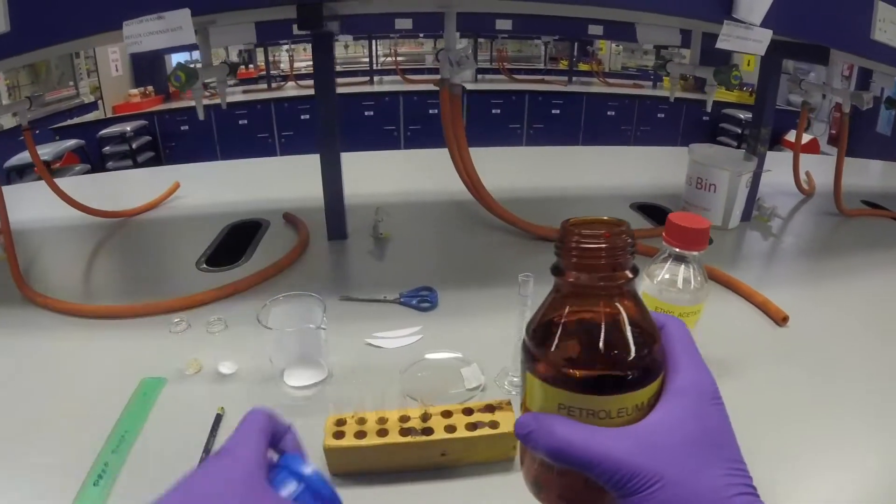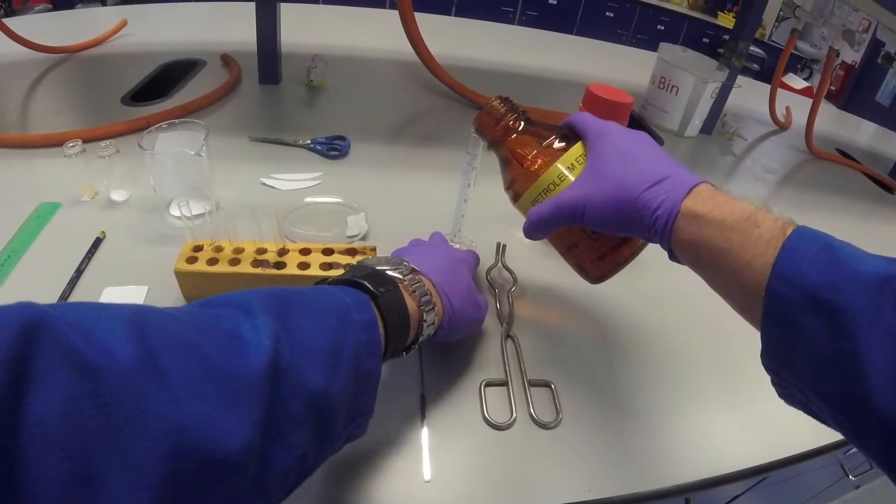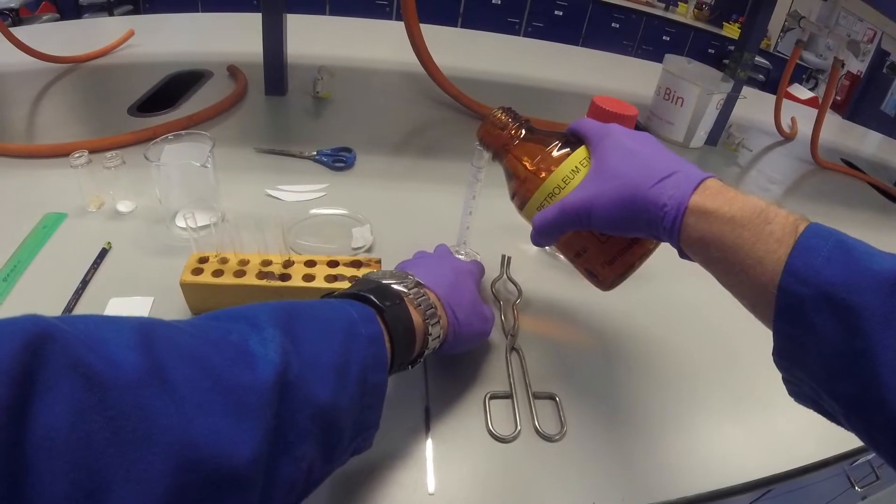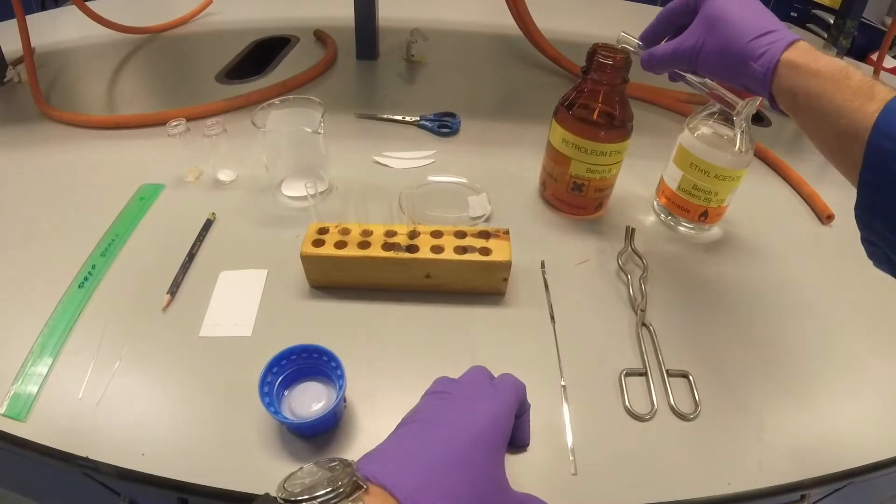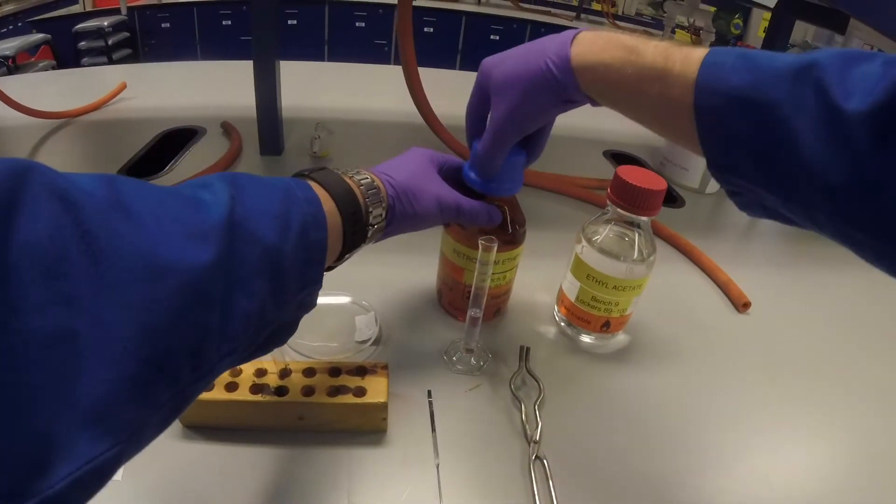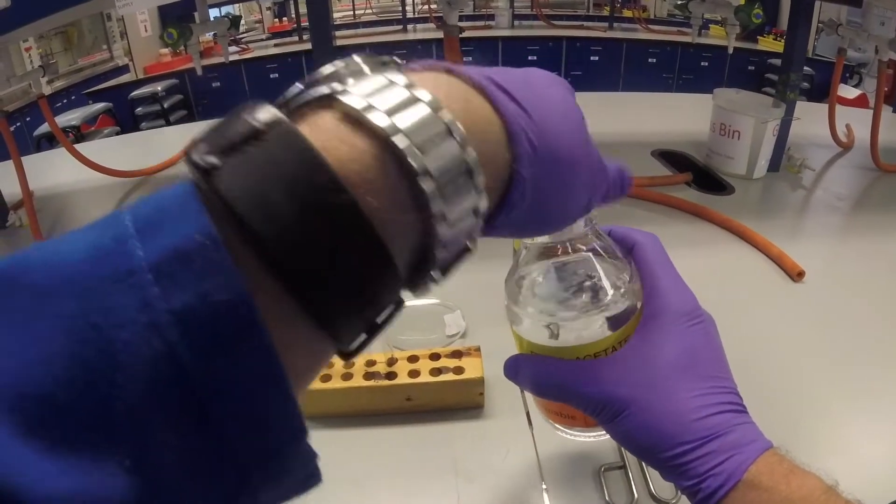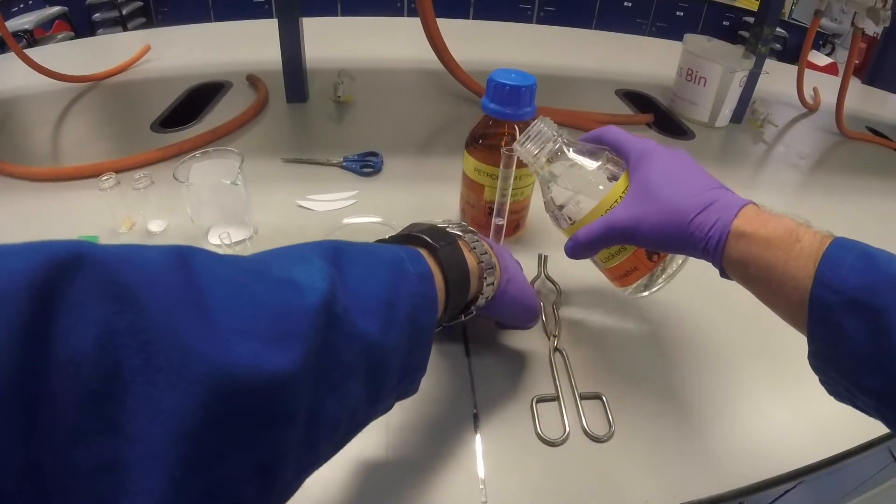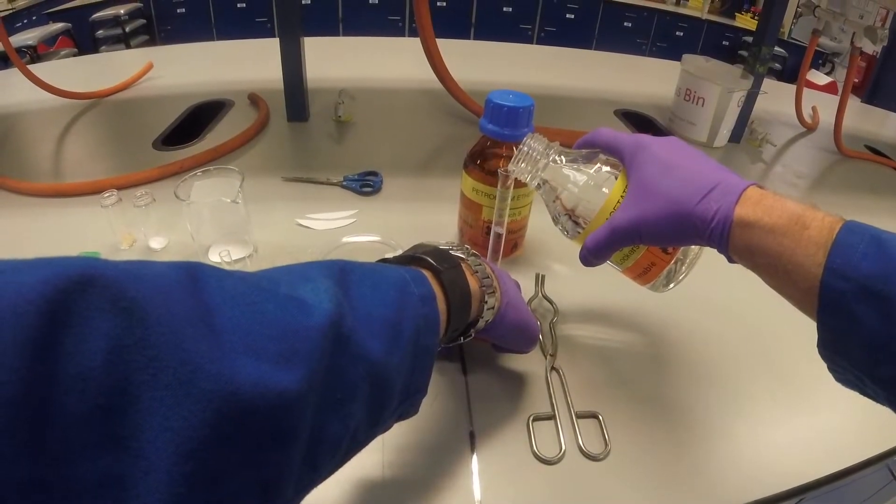The mixture I'm going to use is a 50-50 mixture, so we're going to be using five milliliters of petroleum ether and five milliliters of ethyl acetate.